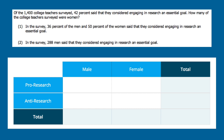Now we can fill in our information. From the question stem, we fill in 1,400 teachers in total. Then 42% of 1,400 is 588, so we fill in 588 pro-research teachers. We want to find the total number of women, so we label that cell W. If there are 588 pro-research teachers and 1,400 total, there must be 812 anti-research teachers. And if there are W female teachers and 1,400 total, there must be 1,400 minus W male teachers.